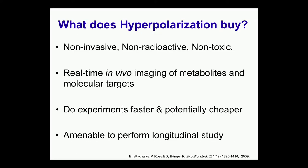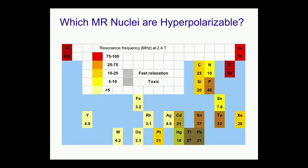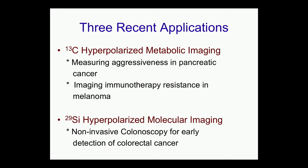With hyperpolarization, we can do completely non-invasive, non-toxic imaging — we are just changing the magnetic state — and we can do real-time imaging faster and potentially cheaper. Right now we are only using carbon and silicon from the periodic table. I'm going to give you three case studies: how can we measure aggressiveness in pancreatic cancer, can we image immunotherapy resistance, and on a totally different modality, silicon hyperpolarization for non-invasive colonoscopy. Each of them has a huge application in future data science — I want to emphasize the word future, because right now we are only scratching the surface.